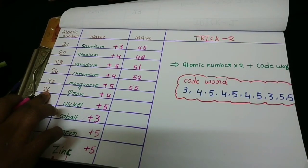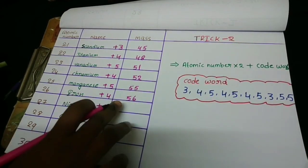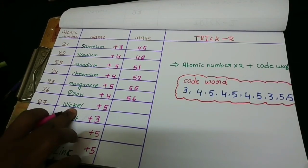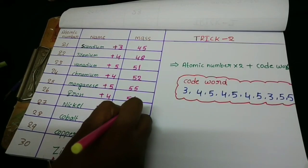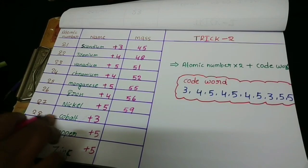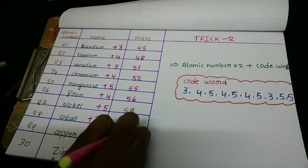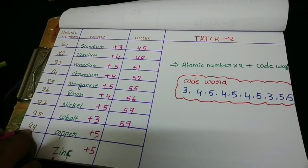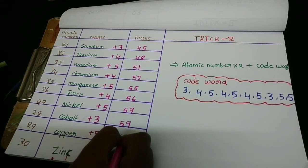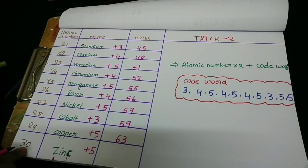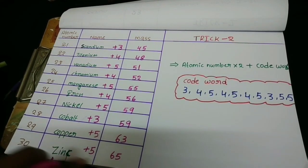Continuing with Trick 2. Iron: 26 × 2 = 52, 52 + 4 = 56. 56 is the atomic mass of iron. Cobalt: 27 × 2 = 54, 54 + 5 = 59. Nickel: 28 × 2 = 56, 56 + 3 = 59. 59 is the atomic mass. Copper: 29 × 2 = 58, 58 + 5 = 63. 63 is the atomic mass of copper. Zinc: 30 × 2 = 60, 60 + 5 = 65. 65 is the atomic mass of zinc.